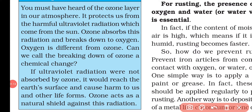You have all heard about the ozone layer, which is the protective layer that protects us from harmful ultraviolet rays. When sunlight or harmful radiation falls on the ozone layer, it absorbs the radiation. Ozone has the formula O3. When O3 receives ultraviolet rays, it converts into O2 + O, and that O again combines with O2 to reform O3. In this way, the level of ozone is maintained, protecting us from skin cancer and eye defects.